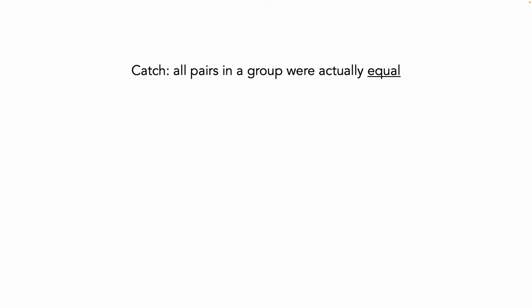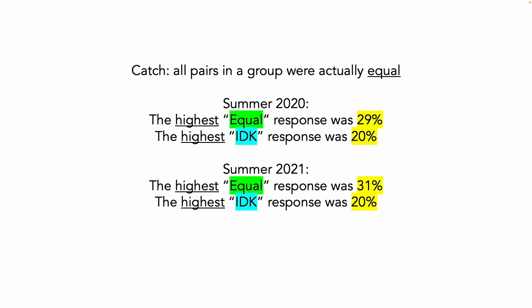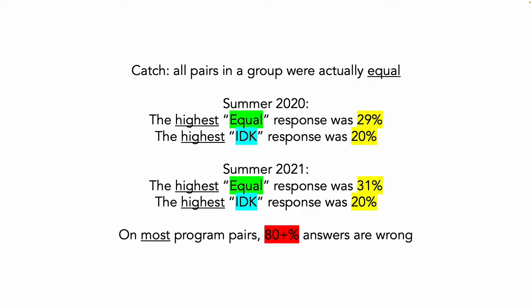We set up this study so that all programs in each group are actually equivalent in performance. Therefore, we would expect to see lots of responses of 'equal'; we would also be very happy with 'I don't know' answers, given the unfamiliarity of the language and programming style. What we saw was very different — we rarely saw either of those two answers, in either year. These numbers paint a very optimistic picture by presenting the best cases. Most of the time, over 80% of the answers were the wrong ones — that is, neither 'equal' nor 'I don't know.'